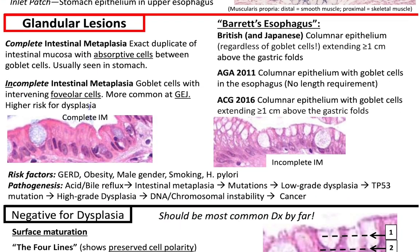Glandular lesions include intestinal metaplasia, complete and incomplete type. Incomplete type has a higher risk for dysplasia, which in turn has a higher risk of carcinoma. Complete intestinal metaplasia is the exact duplicate of intestinal mucosa with absorptive cells between your goblet cells, usually seen in stomach. If you see complete intestinal metaplasia, a differential to keep in mind is AMAG — autoimmune metaplastic atrophic gastritis — which increases risk for pernicious anemia and neuroendocrine neoplasm.